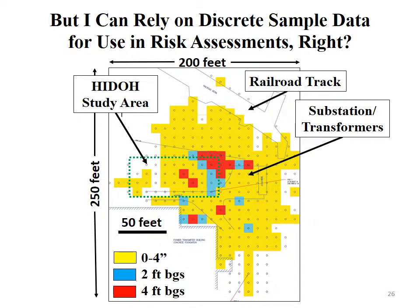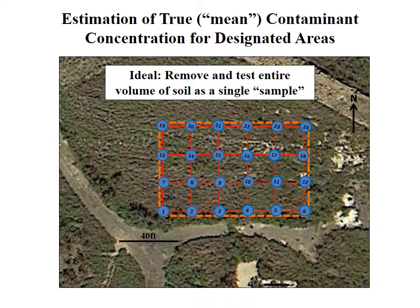So we definitely have a problem for site investigations trying to test a spoonful of dirt at a time to determine the extent of contamination. You might think you could still rely on discrete soil sample data for risk assessment. Here's the study area — about two to three acres — where they collected all the discrete samples. If this area were to be split into 5,000 square foot house lots and each lot tested for PCB concentrations using discrete samples, the question is: can you do that reliably?